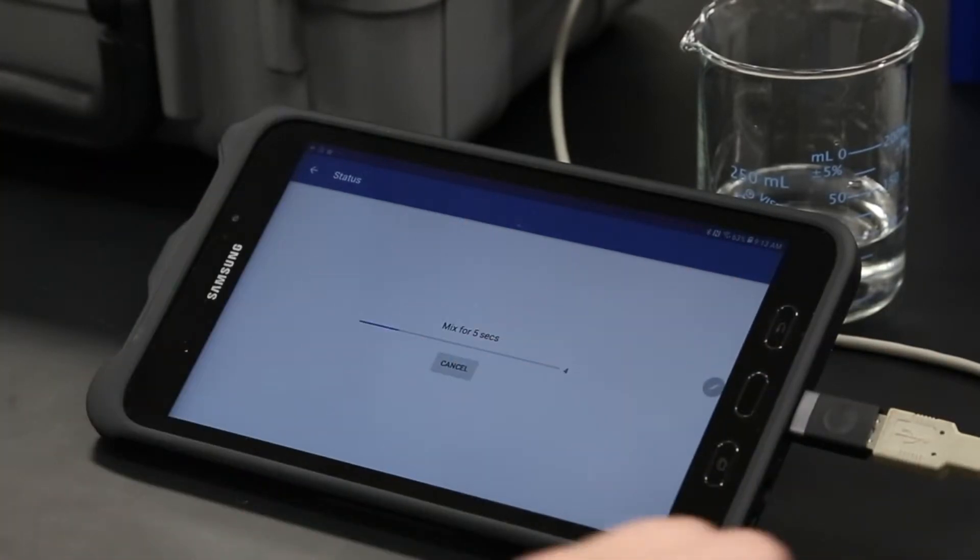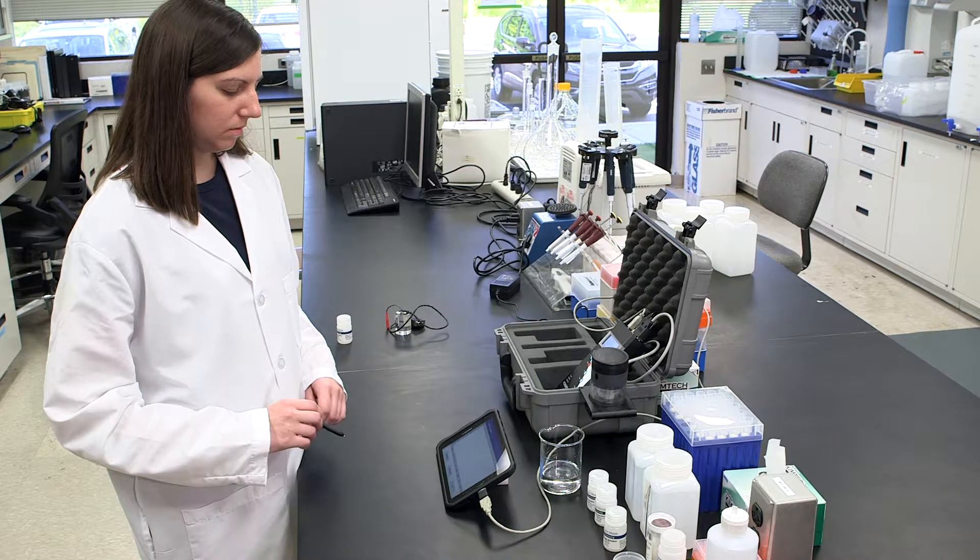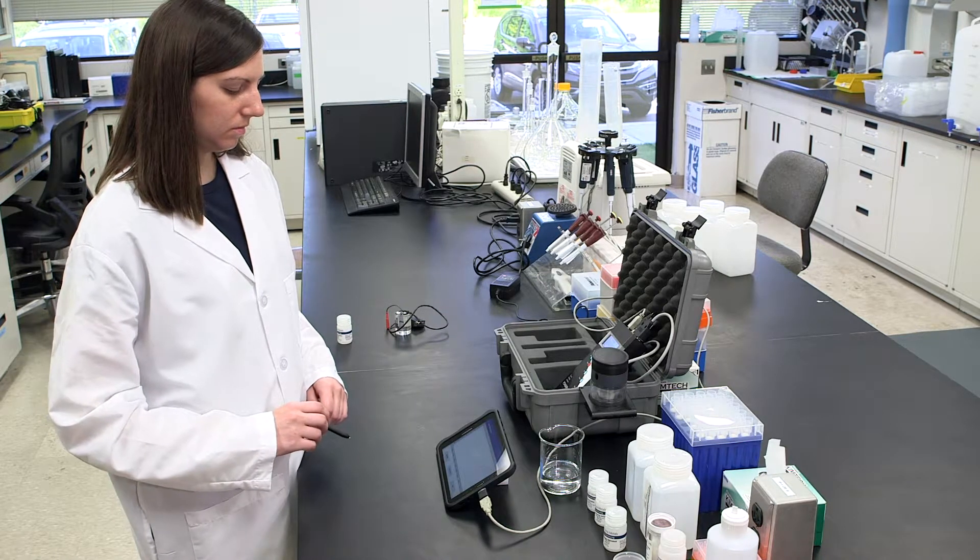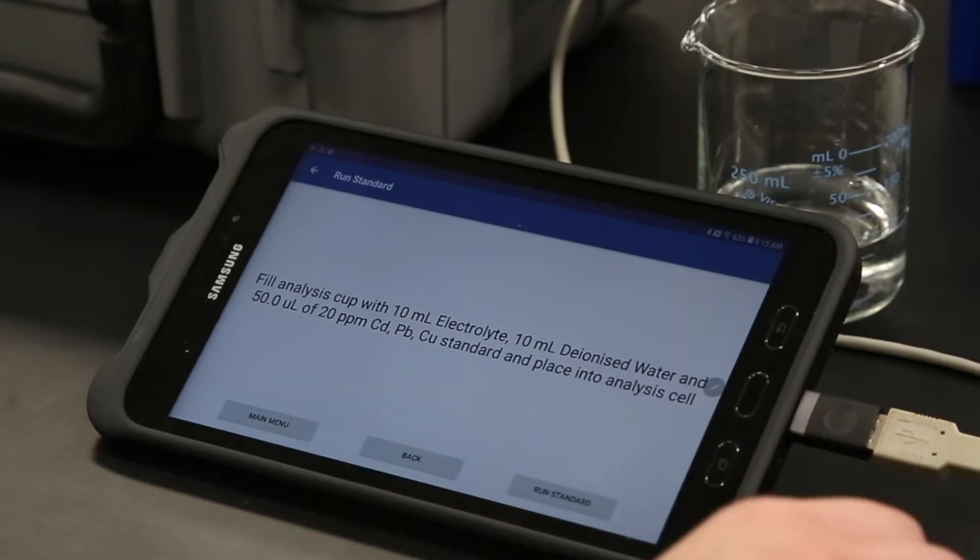Place the electrodes into the cup and click Next to initiate the measurement of the blank solution. Alternatively, if a blank is not required, the Skip Blank button may be selected. This video will carry out a blank. Upon completion, the voltammogram for the blank solution will be displayed. Once a good blank is achieved, click Next to analyze the standard.